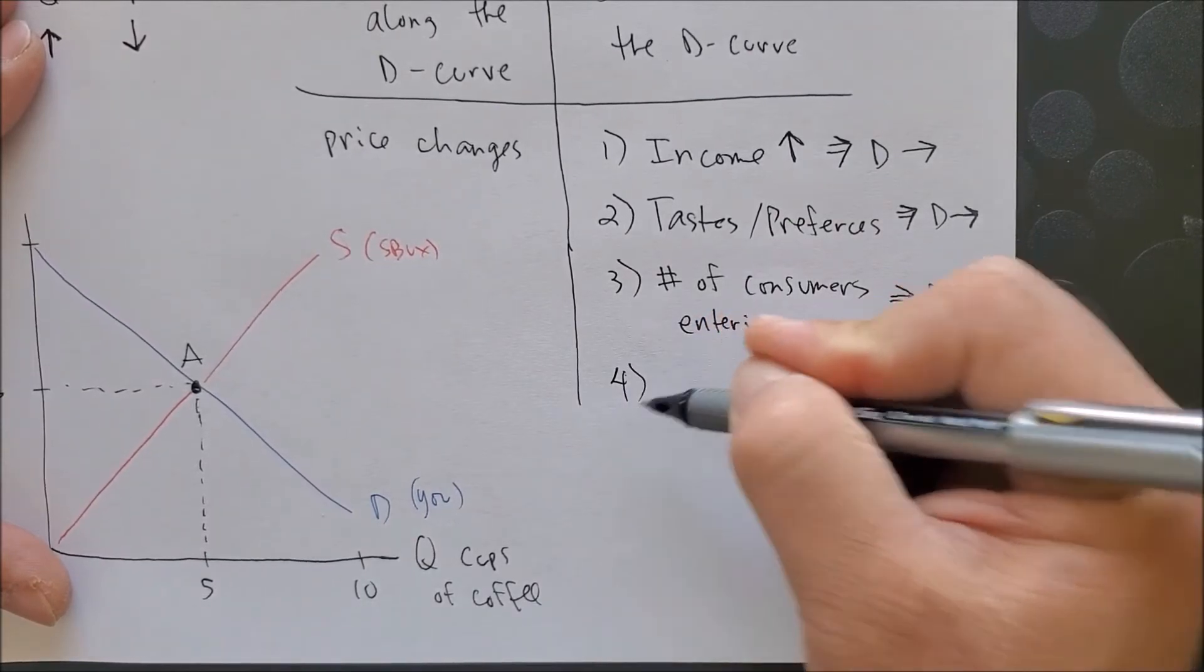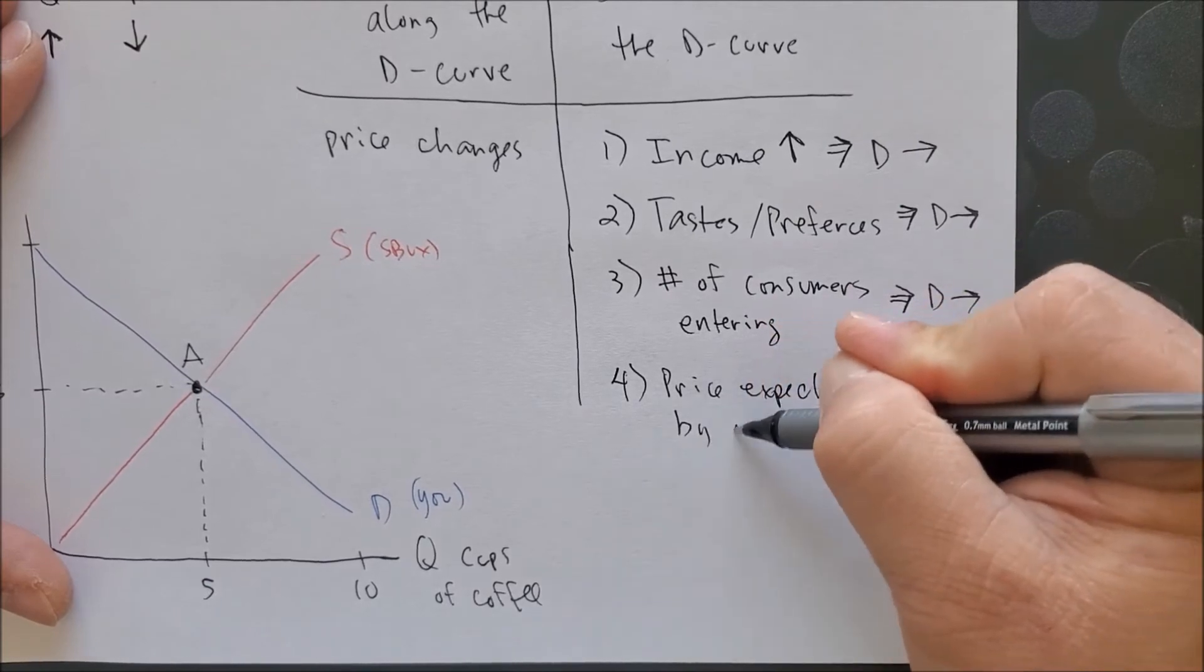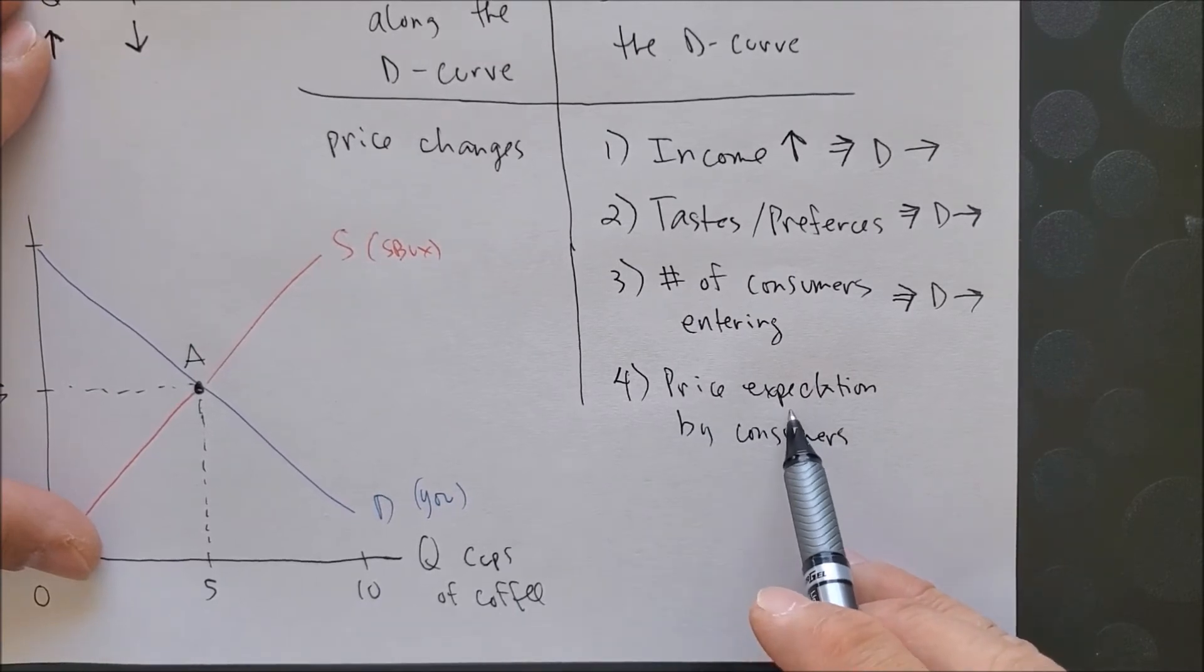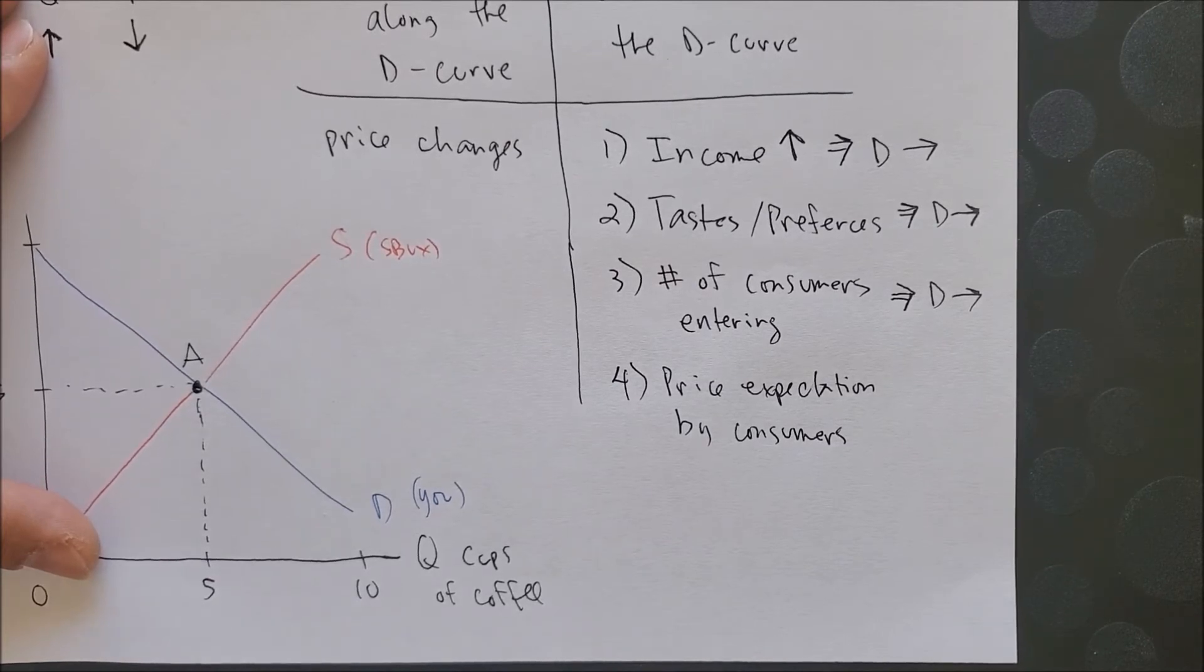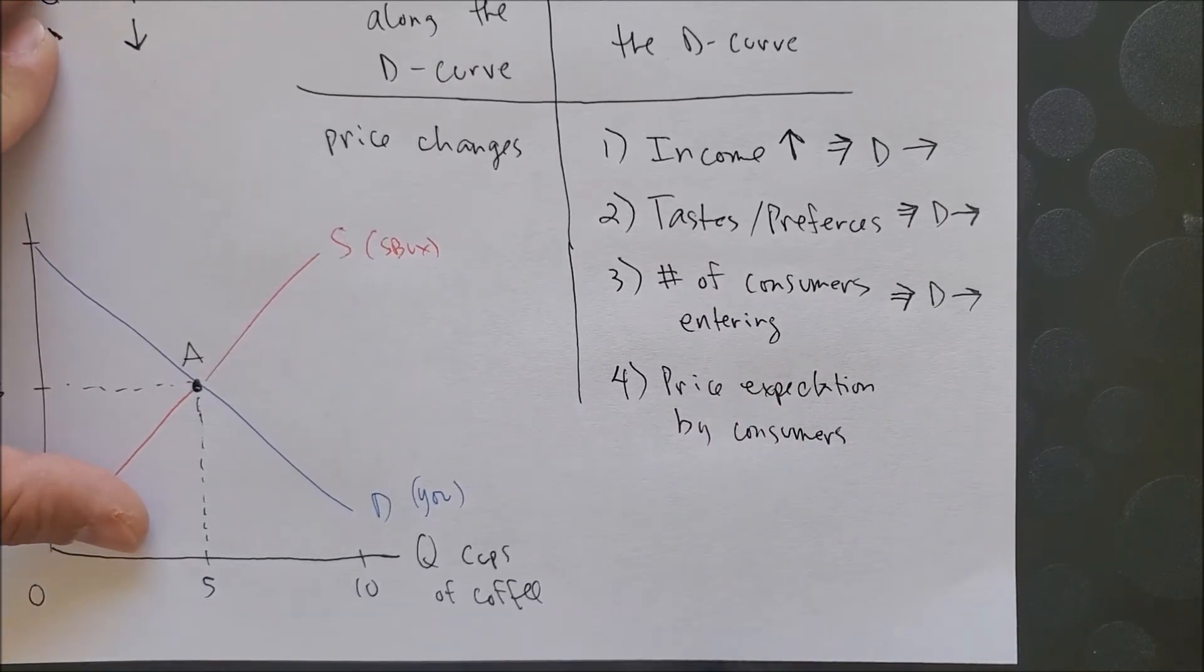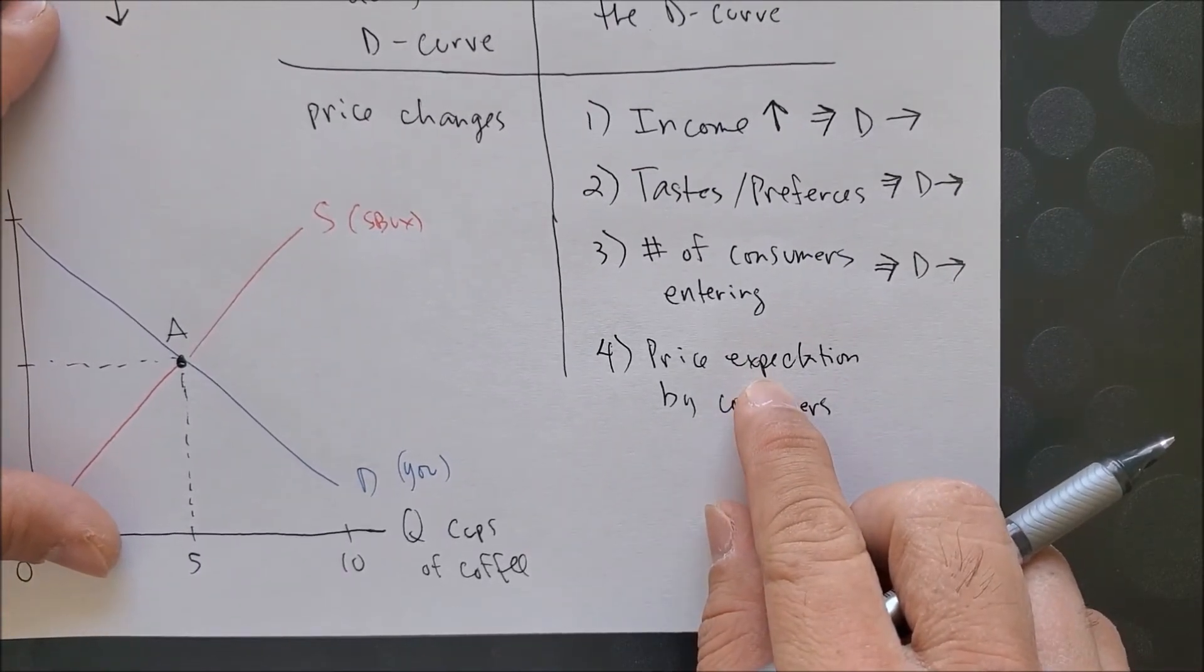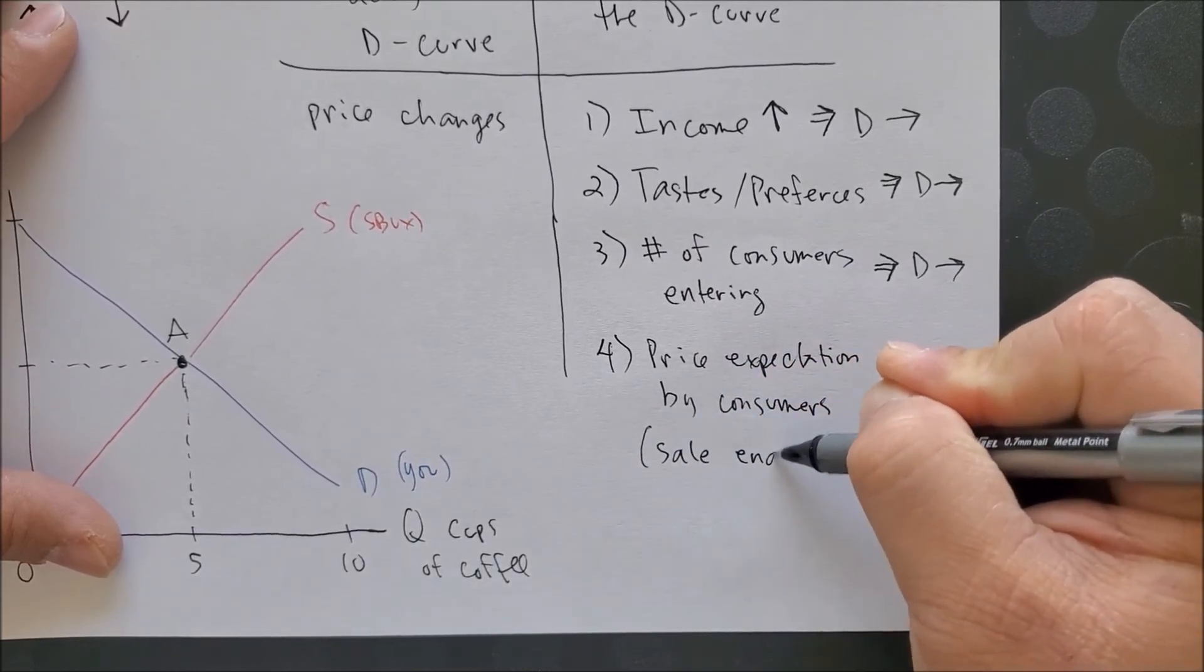And number four, we're going to focus on the price expectation by consumers. So again, we have the word price, but we also have the word expectation. So when you expect the price of a good, you are now thinking in the near future. Again, we're focusing on price change today as opposed to you expect the price to change in a future date, maybe tomorrow. So for example, to keep the consistency of the demand shifting to the right, you expect the price of a good to go back to its original price tomorrow. So we can put here in parentheses, sale ends today.